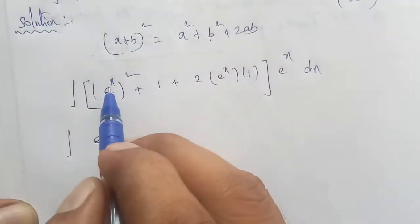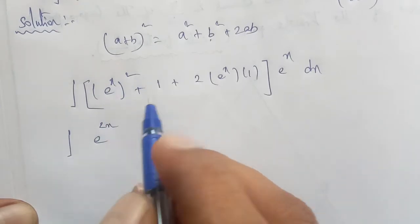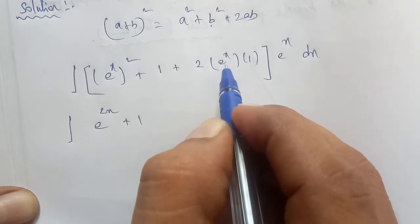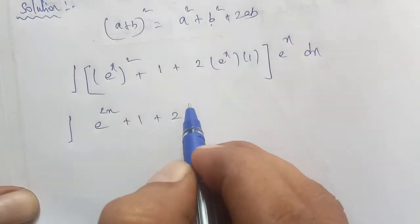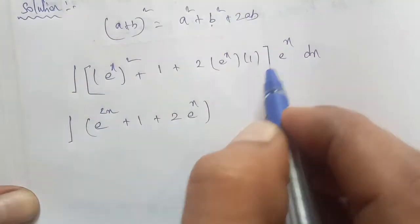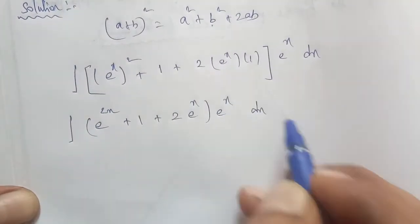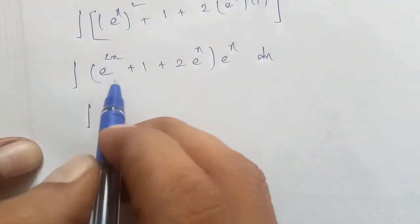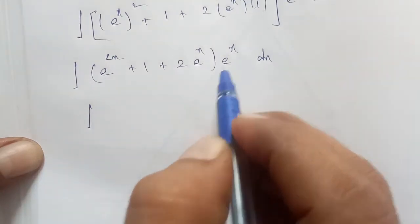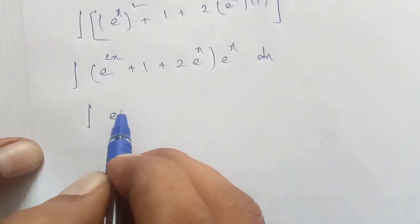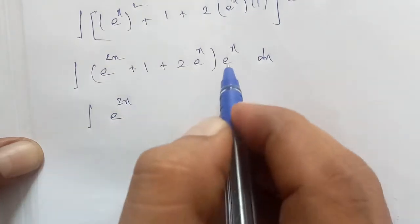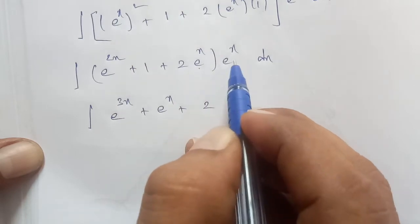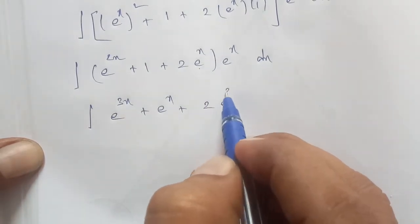Next, plus 1, plus 2*e^x. So we get 1*e^x dx. Now we multiply e^(2x) * e^x, which gives e^(3x). Next, 1*e^x is e^x, plus 2*e^x * e^x gives 2*e^(2x), all multiplied by dx.